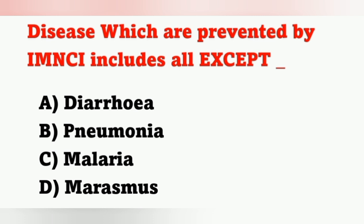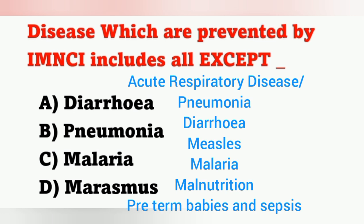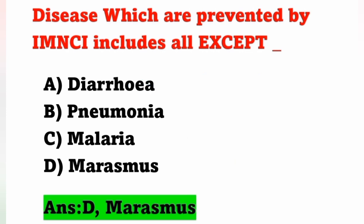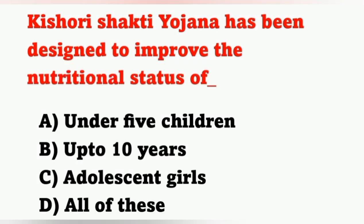Next question: Diseases prevented by IMNCI include all except? Options: A) Diarrhea, B) Pneumonia, C) Malaria, D) Marasmus. Diseases prevented by IMNCI include acute respiratory disease (pneumonia), diarrhea, measles, malaria, malnutrition, preterm babies, and sepsis. The disease NOT included is marasmus. Option D is the correct answer.